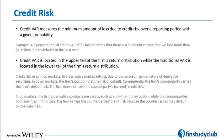Credit VAR is very similar to the concept of VAR. It measures the minimum amount of loss due to credit risk over a reporting period with a given probability. For instance, if we compute the 5% annual credit VAR of a portfolio and it turns out to be $1 million, it implies there is a 5% probability that the portfolio would witness a loss of $1 million or more due to defaults over the next one year.